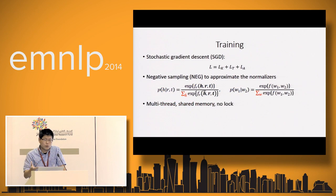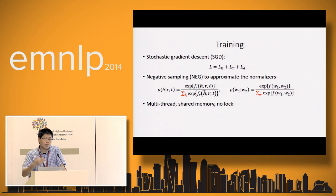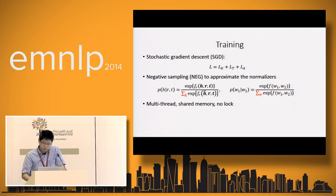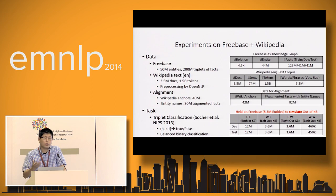For training, we simply use SGD to optimize the objective function. Because both probabilities contain normalizers involving a summation over a very large vocabulary, we use negative sampling to approximate this summation. In terms of implementation, we use multi-threaded implementation with shared memory. We conduct experiments on almost the full scale of Freebase and Wikipedia — about 50 million entities and 200 million triplets of facts, and the full English Wikipedia.